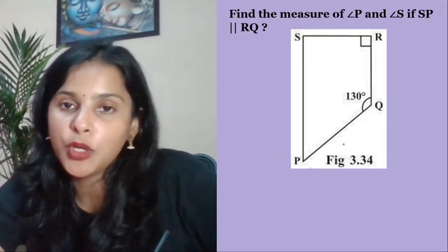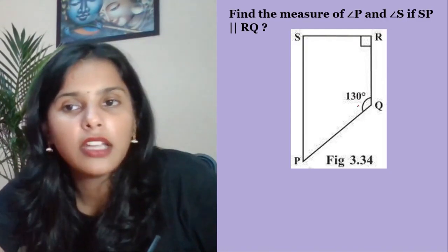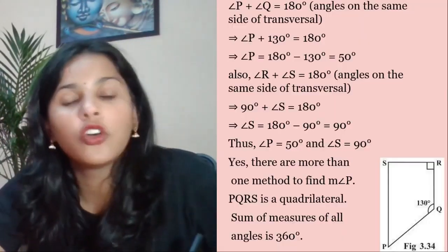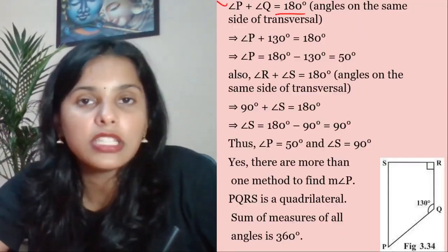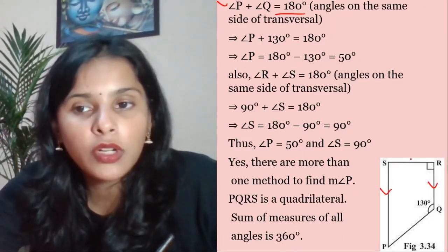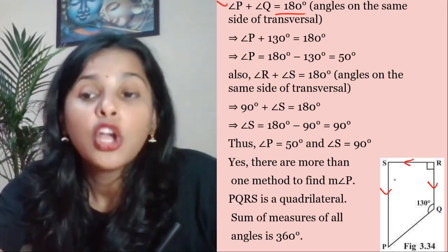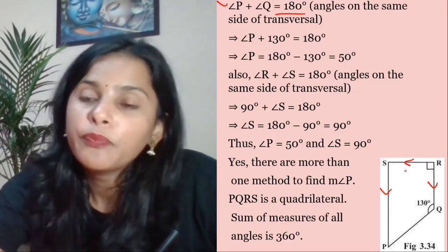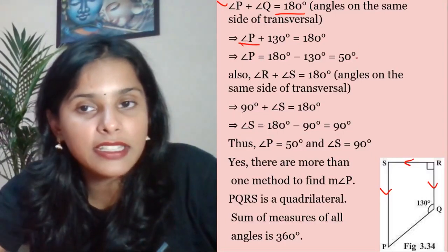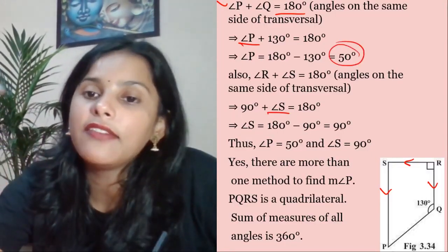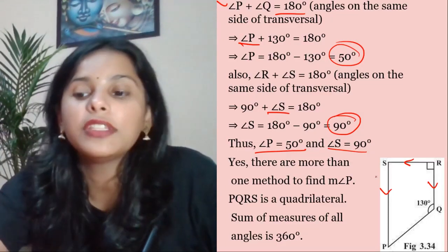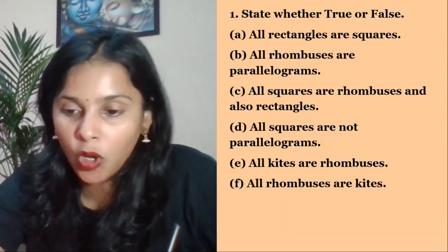Question 3: Find the measure of angle P and angle S if SP and RQ are parallel to each other. Since SP is parallel to RQ, angles on the same side of the transversal are co-interior angles and sum to 180. Given angle Q = 130 and angle R = 90, angle P + angle Q = 180, so angle P = 180 − 130 = 50 degrees. Angle S = 90 degrees.